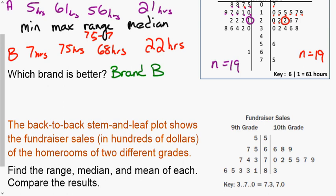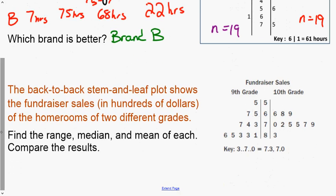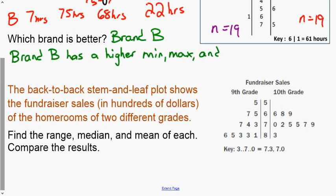If it asks you why, even though it doesn't, we're going to say brand B has a higher min, max and median. That's what we're talking about, why do you say brand B is better.